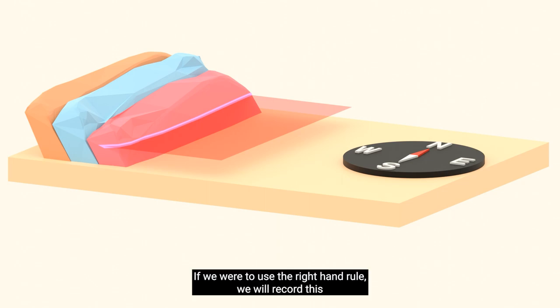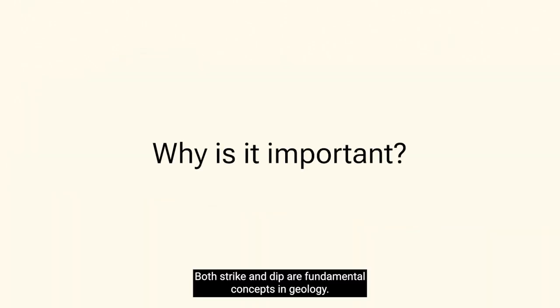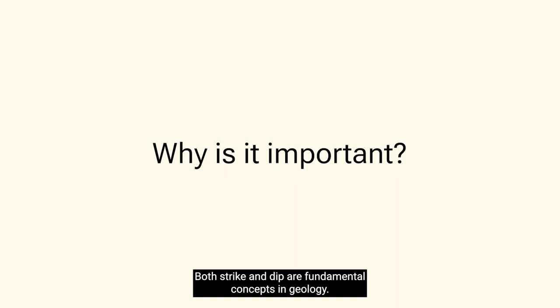If we were to use the right-hand rule, we will record this as zero degrees north in our field notes. Both strike and dip are fundamental concepts in geology. They enable scientists to record and communicate the orientation of structures so that they can be mapped. Without strike and dip, accurate geologic maps and cross-sections could not exist.